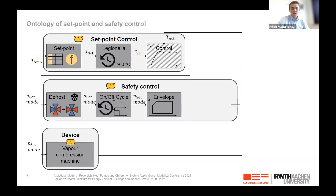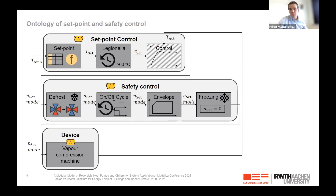A third option is the operational envelope of the compressor, realized in real devices by pressure transducers and thermistors, ensuring maximum pressures and temperatures are not exceeded. Lastly, we implemented a model to prevent freezing, applicable for water or brine source devices, ensuring the minimum temperature — for example, zero degrees Celsius for water source heat pumps — is not violated, which in Modelica would cause a simulation error and in reality would result in broken devices. These safety controllers are optional, but we highly encourage their use as they realistically simulate real conditions.